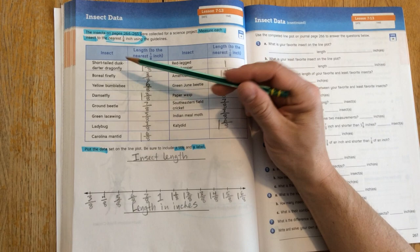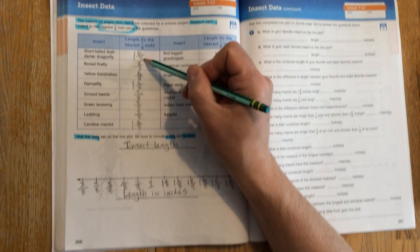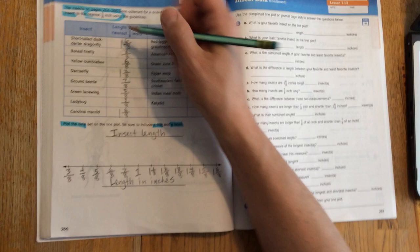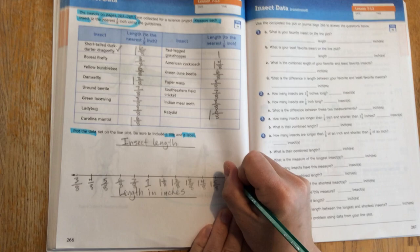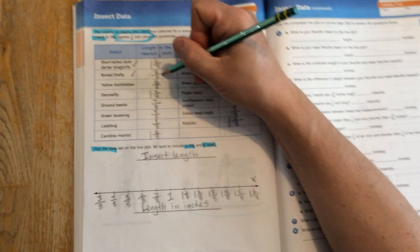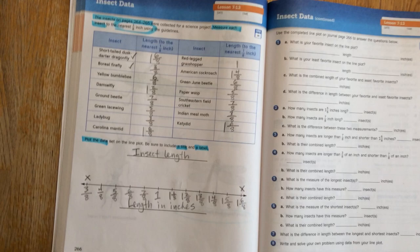So what I'm going to do here is for each measurement, I'm going to put an x over the number on the number line. So for example, the short-tailed dusk darter dragonfly is 1 and 6 eighths, so I'm going to put an x right there. The boreal firefly was 3 eighths of an inch, so I'm going to put an x right there. They're on opposite sides of my line plot graph, okay?